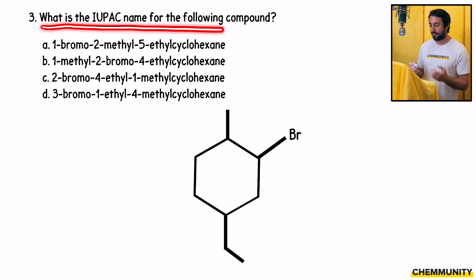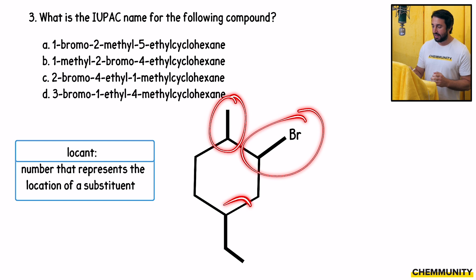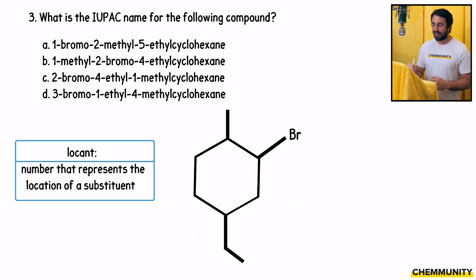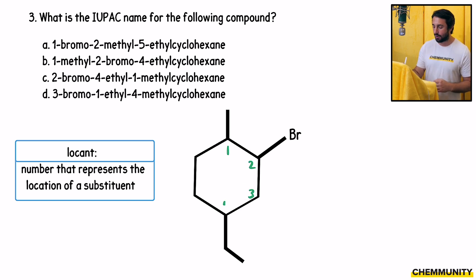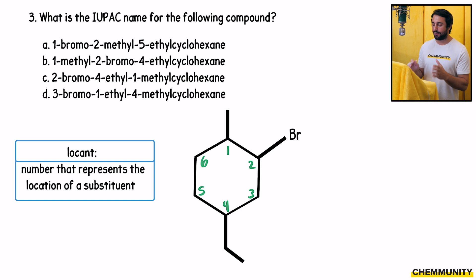Number three: what is the IUPAC name for the following compound? We have a cyclohexane. The way we name cyclohexanes is a little different from linear molecules — we need to find the lowest set of locants possible. We have three substituents and we need to number the ring to give them the lowest set of locants. One could be any of these carbons, then we go either clockwise or counterclockwise. The lowest set of locants we can get is 1, 2, 4. If we started with the ethyl we could get 1, 3, 4; if we started with the bromo we could get 1, 2, 5 — none of these are the lowest possible. The numbering I've drawn gives the lowest set of locants.